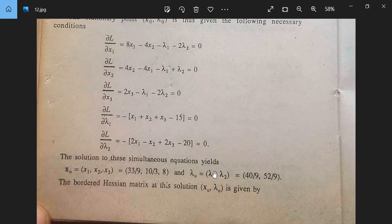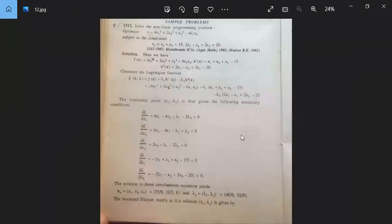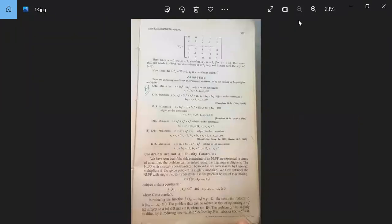The solution to these simultaneous equations yields x_0 equal to (x_1, x_2, x_3), 3 variables, and lambda_0 equal to (lambda_1, lambda_2) values 40 by 9 and 52 by 9. Now we will evaluate the bordered Hessian matrix at this solution x_0, lambda_0. Number of constants and number of variables, so bordered Hessian matrix.